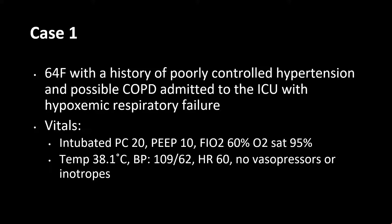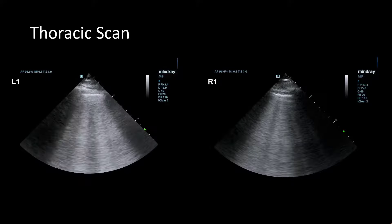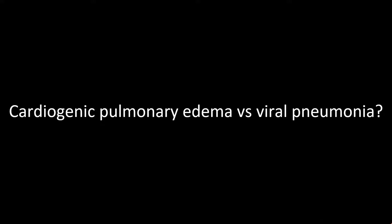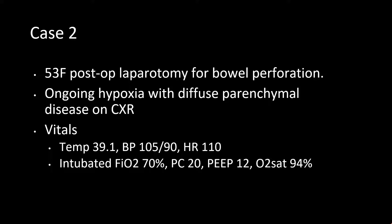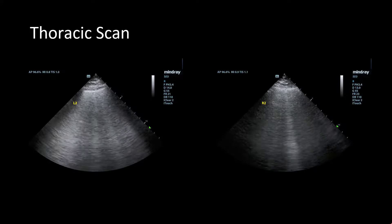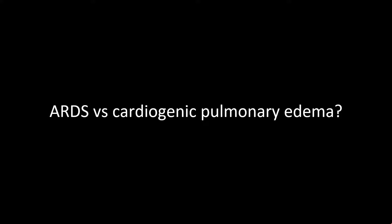Case 1 is a 64-year-old woman with a history of poorly controlled hypertension and possible COPD admitted to the ICU with hypoxemic respiratory failure. Her thoracic scan showed anterior B lines bilaterally, and the question was: is this cardiogenic pulmonary edema or viral pneumonia? Case 2 is a 53-year-old female post-op laparotomy for bowel perforation with ongoing hypoxia and a chest x-ray showing diffuse parenchymal disease. Her lung scan shows diffuse B lines bilaterally. The clinical question is: is this ARDS or cardiogenic pulmonary edema? We'll come back to these cases and hopefully convince you how left atrial pressure can be helpful in solving these problems.